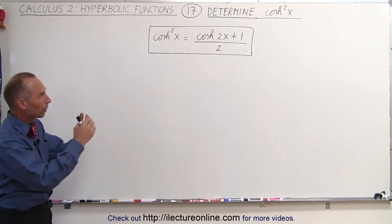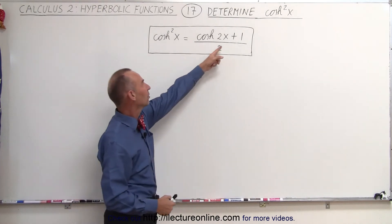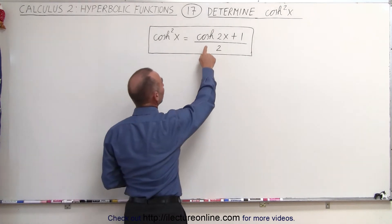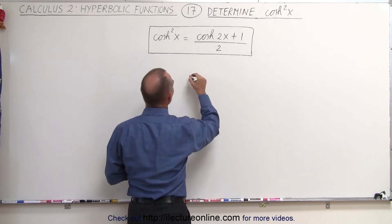We're going to work backwards and show that this is indeed equivalent to that, because that's easier to do. We know that the hyperbolic cosine of 2x can be written as follows.